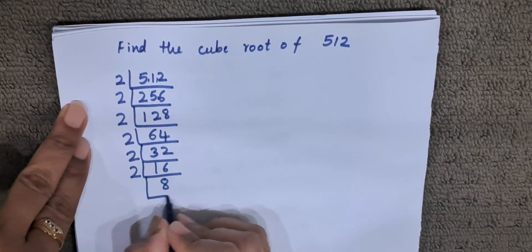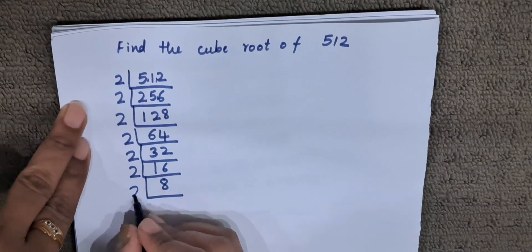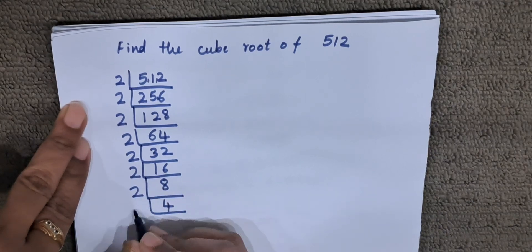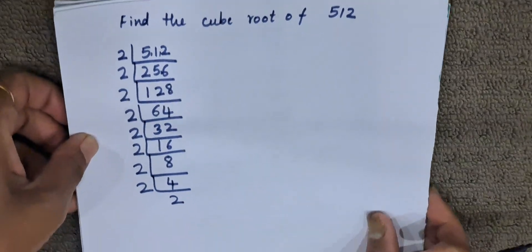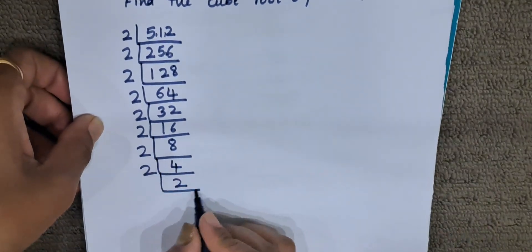So 2 times 8 is 16, 2 times 4 is 8, 2 times 2 is 4. So we have 2 left and we will divide it by 2 again.